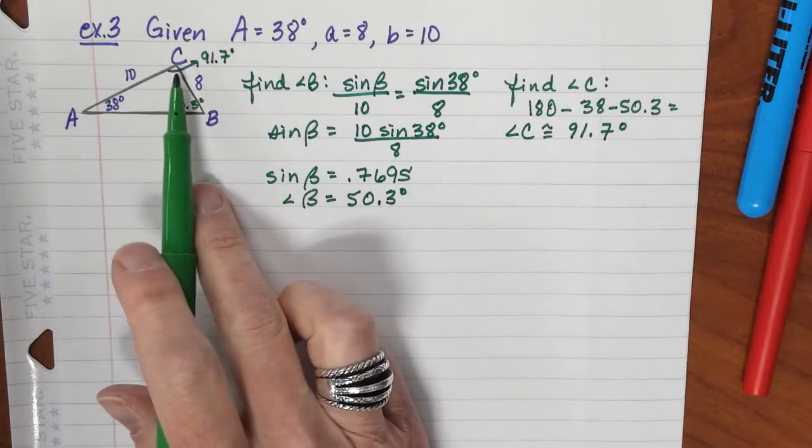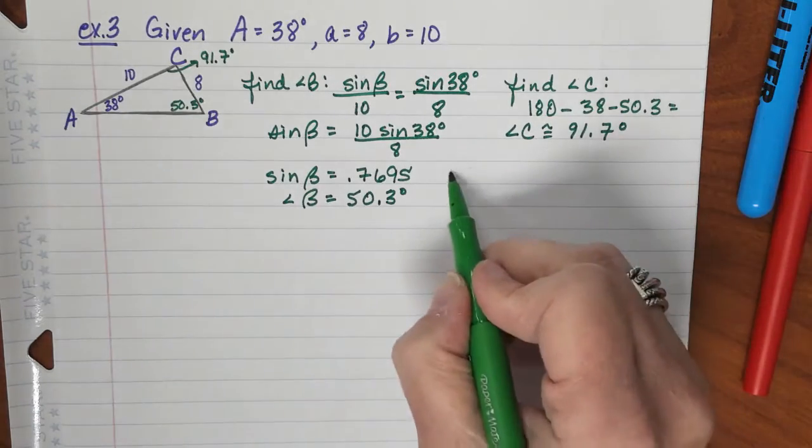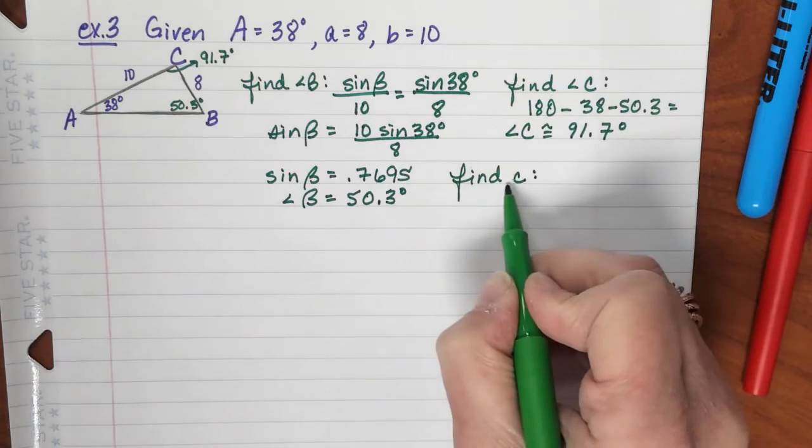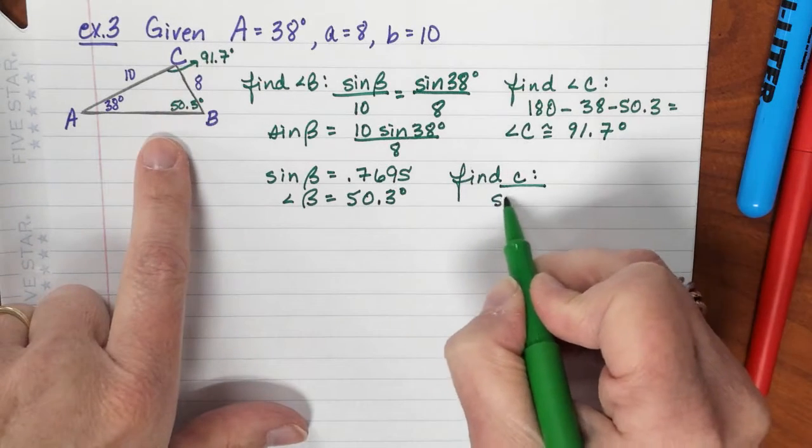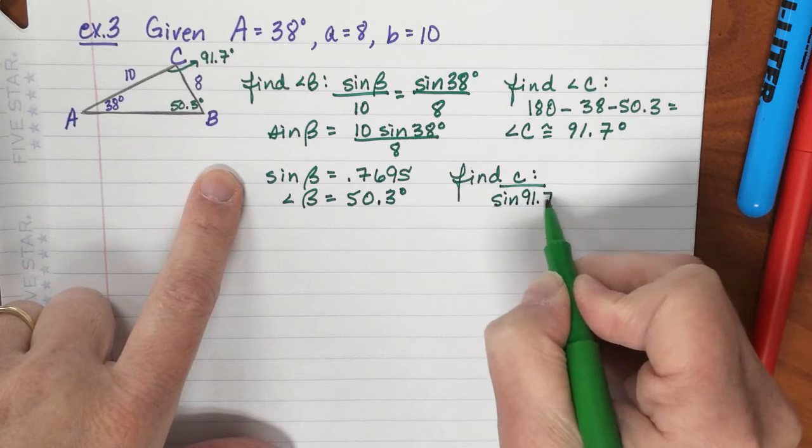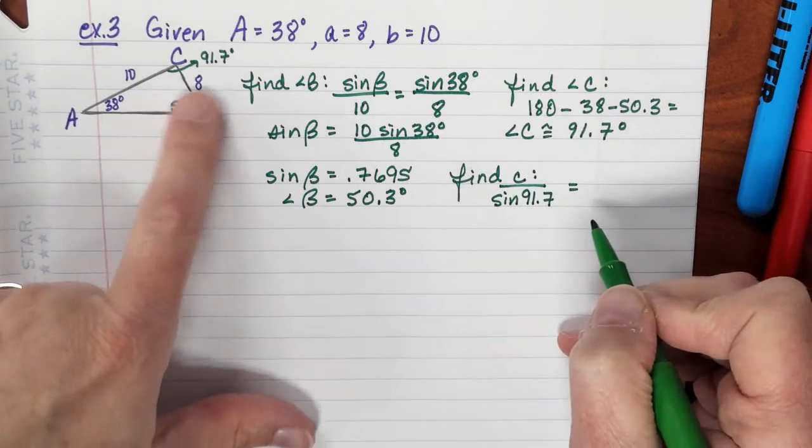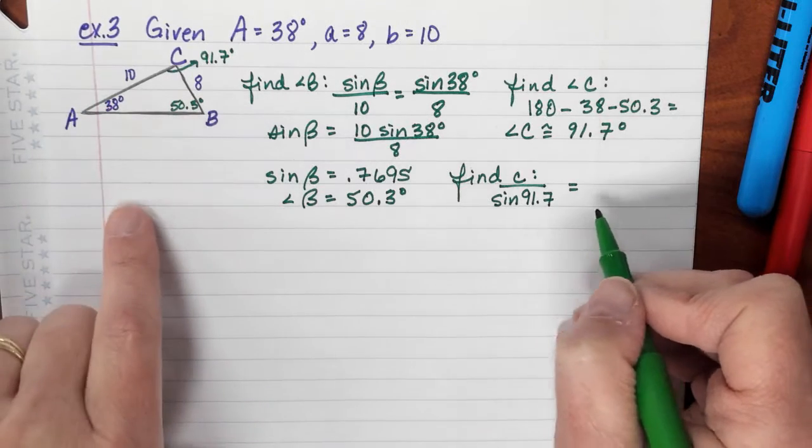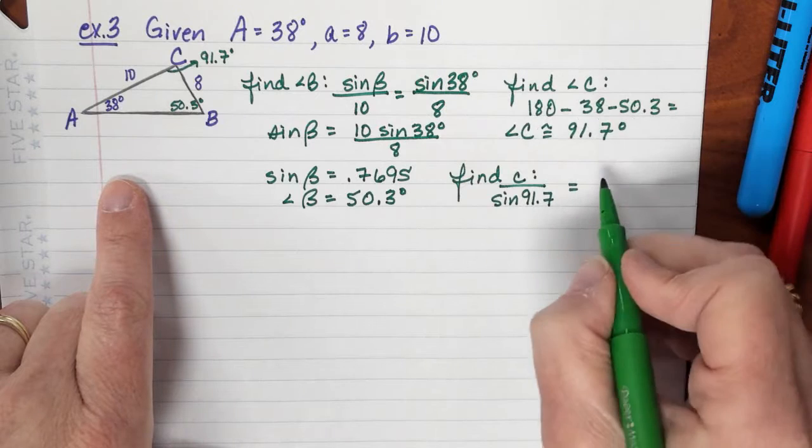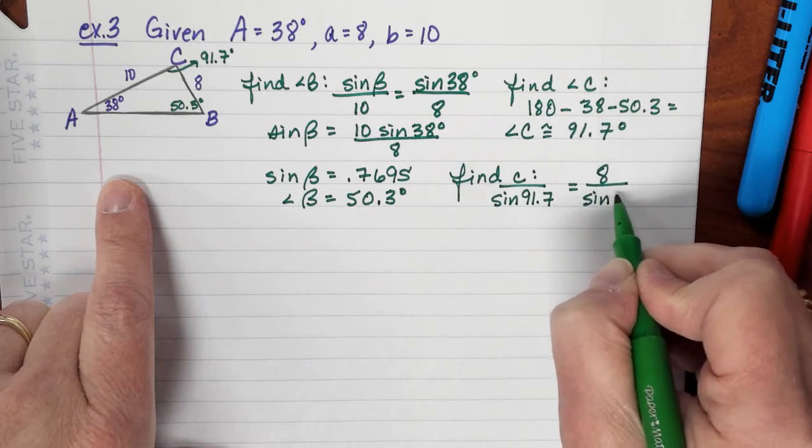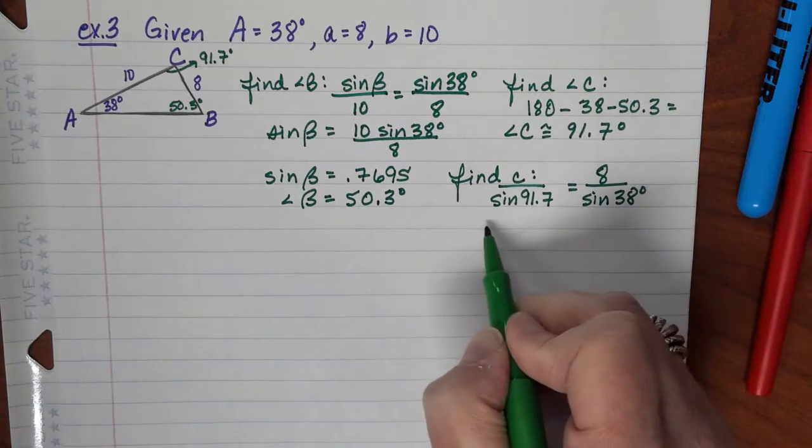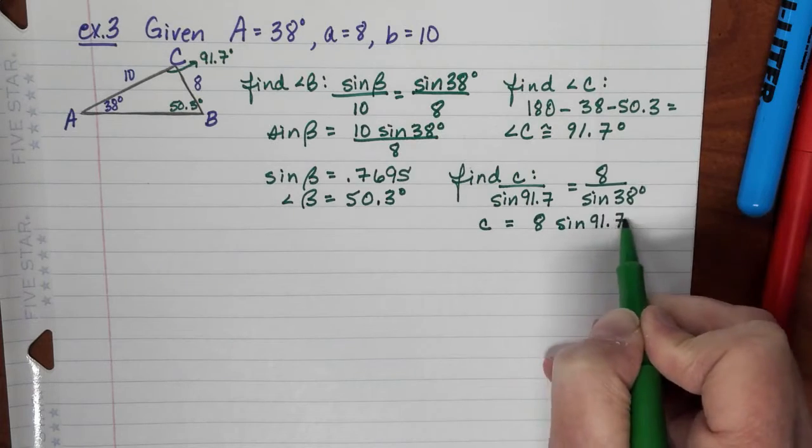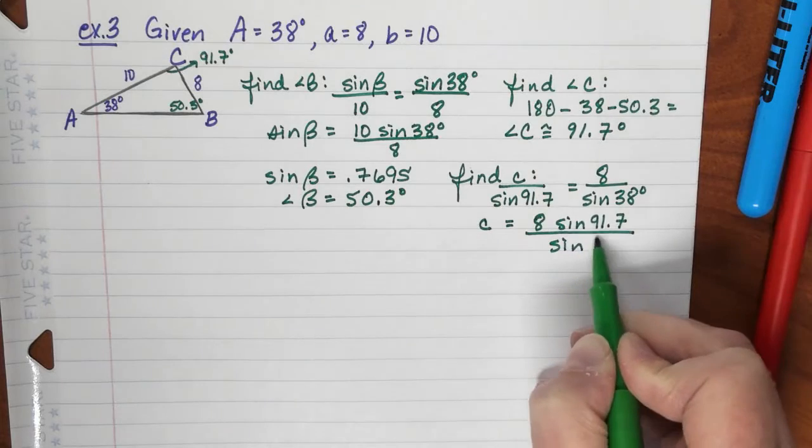Then, I can also, now that I have angle C, I can find side C. So we're going to find little c, and I can establish that relationship, so I have C over, let's just go with the sine of the angle I just determined, so 91.7 equals, and then I always go back to the one I was given. I understand you could use B now, but I may have made an error there, so I always go back to one that I know was in the original problem. So I would have 8 is to the sine of 38.